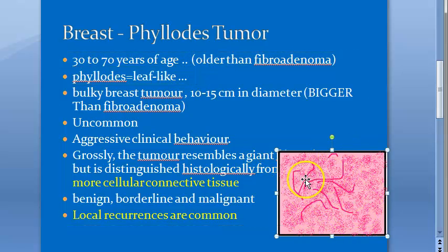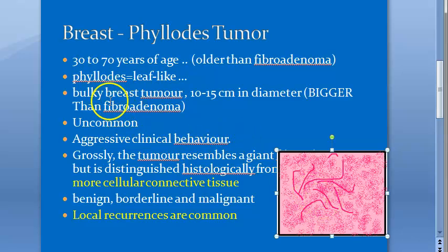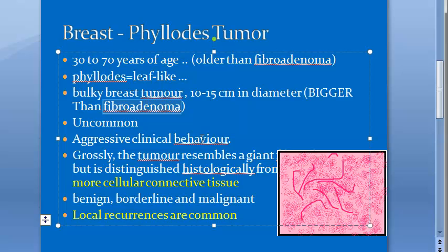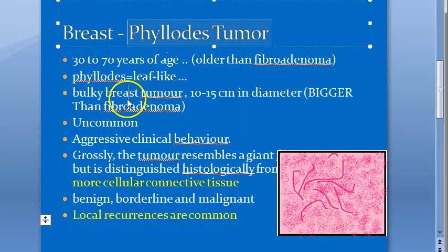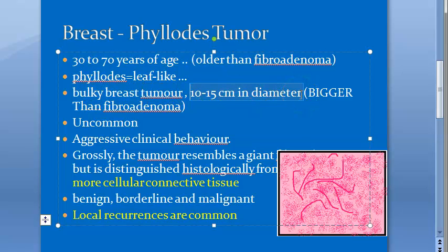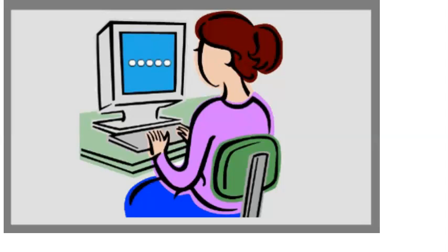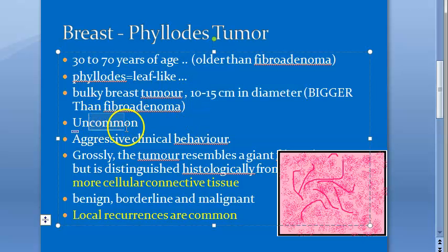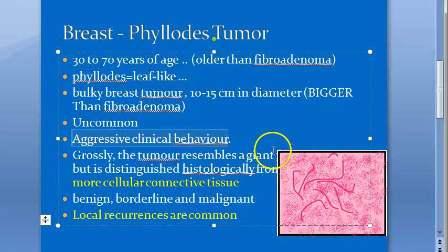The epithelial component becomes compressed into leaf-like structures — straight lines — because the stroma is hypercellular and compresses the ducts. This is a bulky breast tumor: fibroadenoma was only 2 to 4 cm in diameter, whereas phylloides tumor is 10 to 15 cm. They are bigger, occur in older women, and are uncommon. Though fibroadenoma is the most common benign breast tumor, phylloides tumor has aggressive clinical behavior and can become malignant.